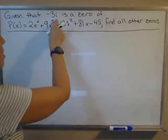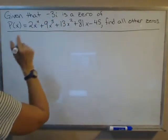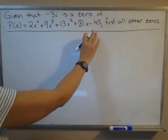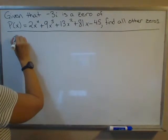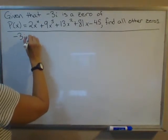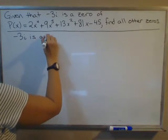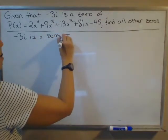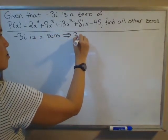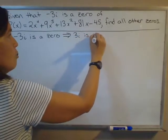Since -3i is a zero and because this has all real coefficients, that implies that the conjugate, which is positive 3i, is also a zero.